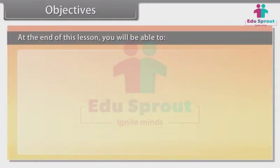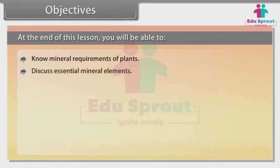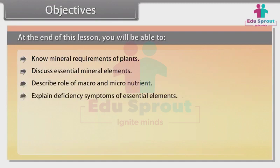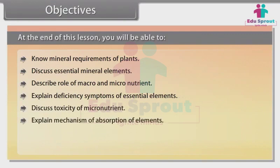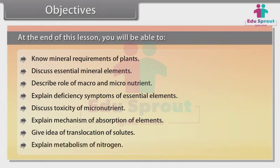At the end of this lesson, you will be able to: know mineral requirements of plants, discuss essential mineral elements, describe the role of macro and micronutrients, explain deficiency symptoms and essential elements, discuss toxicity of micronutrients, explain the mechanism of absorption of elements, give an idea of translocation of solutes, and explain metabolism of nitrogen.